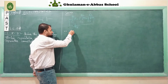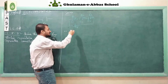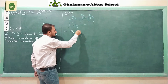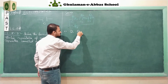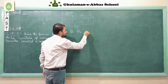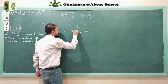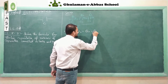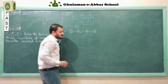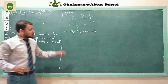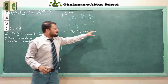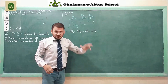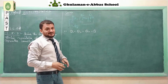So in this circuit, charge Q1, charge Q2, and charge Q3 are all equal to each other. We represent all of them simply as charge Q. This is the first property of series combination: all capacitors carry the same charge Q.